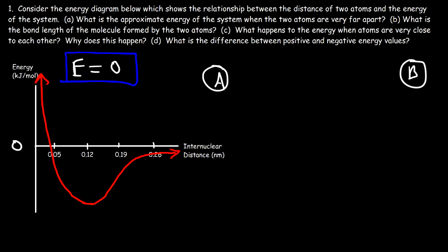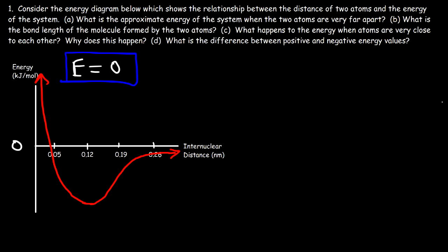Part B: what is the bond length of the molecule formed by the two atoms? To find the bond length, we need to find at what distance the two atoms should be from each other where the energy of the system is at a minimum, because the two atoms are going to find the right distance to lower the energy as low as possible. The lowest energy occurs at a negative value.